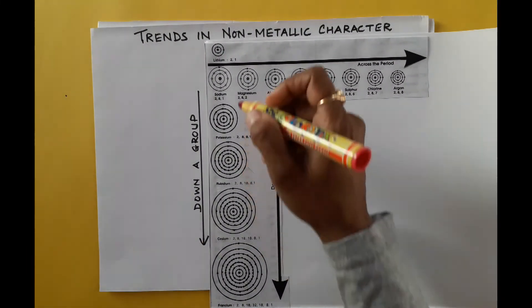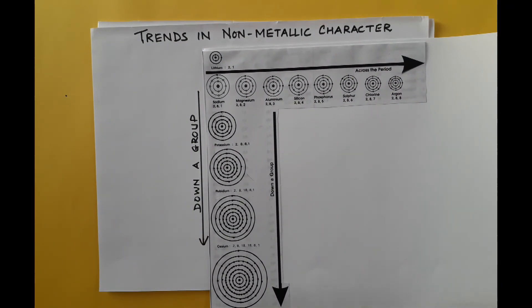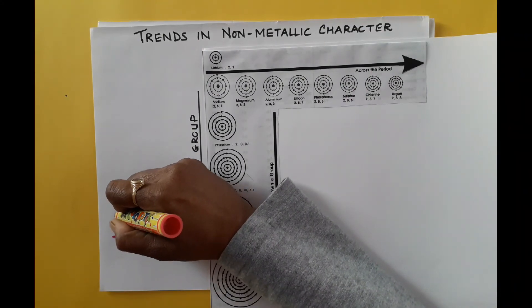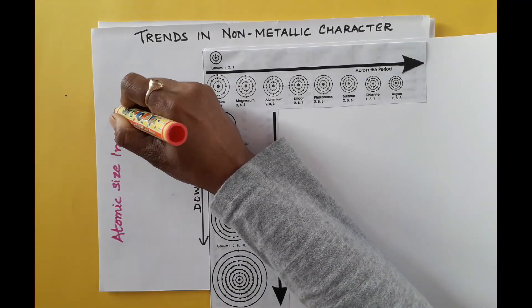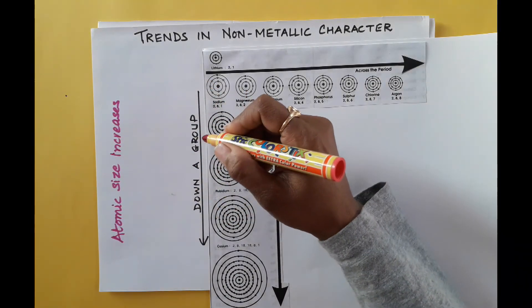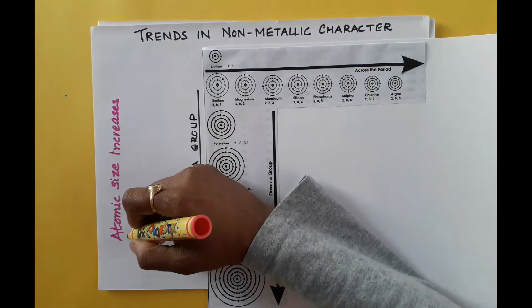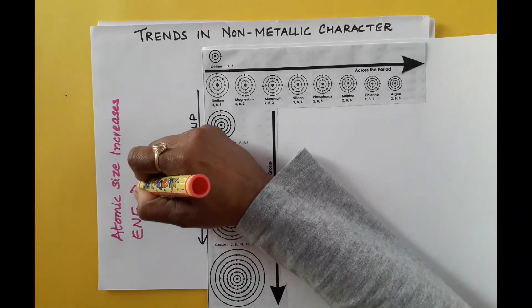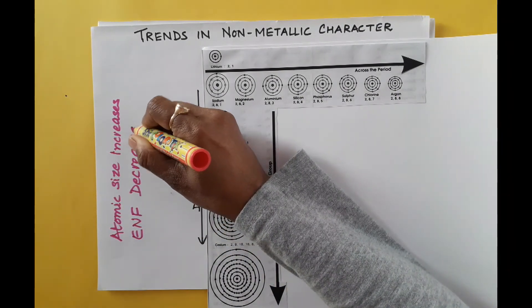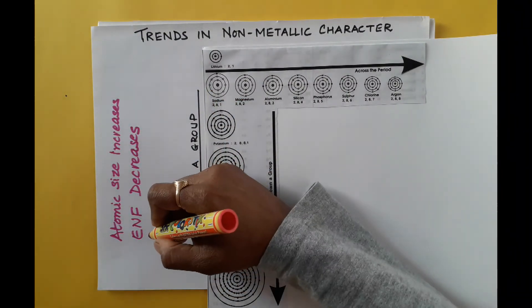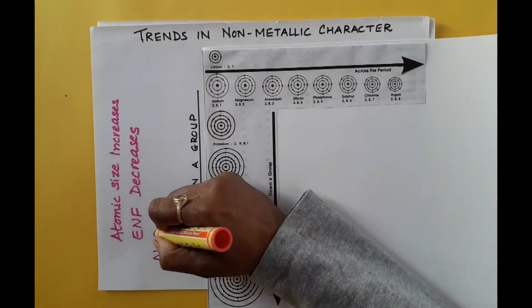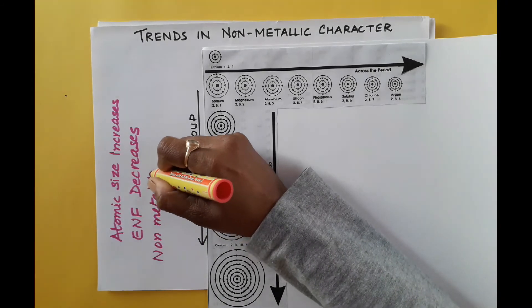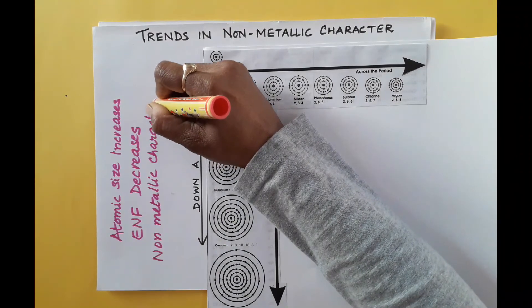Down the group, the number of shells increases, so atomic size increases and electronegativity decreases. As the force of attraction decreases, the element is not able to gain electrons easily. Therefore, non-metallic character decreases down the group.